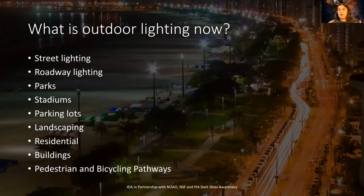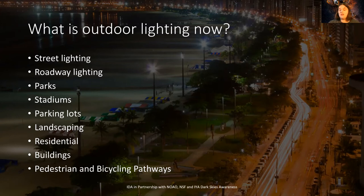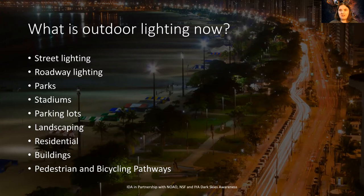So what is outdoor lighting now? Back then it was just an oil lamp on a post. Now we have street lights, roadway lights, parks, stadiums, parking lot lights, landscaping lights, residential buildings, signs — you name it. We have a ton of different sources of light because of the invention of the modern light bulb.